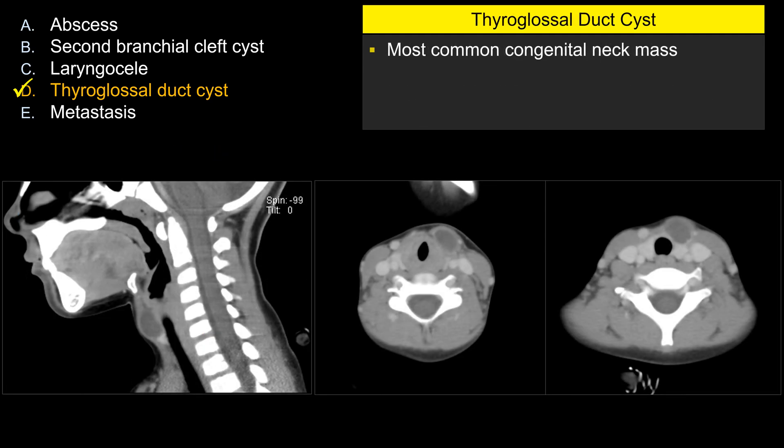Some key facts that may appear on a board exam: thyroglossal duct cyst is the most common congenital neck mass, usually midline, painless, and often discovered incidentally.